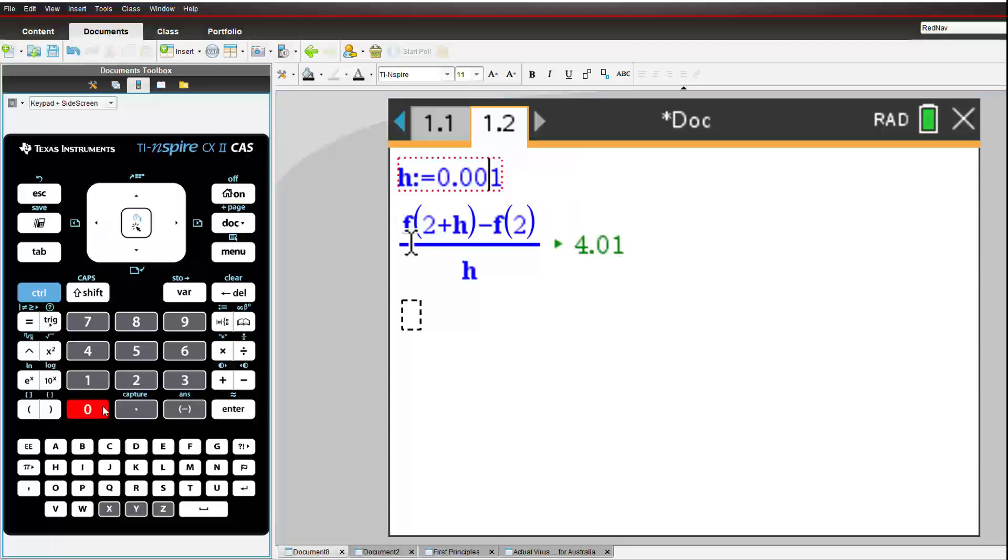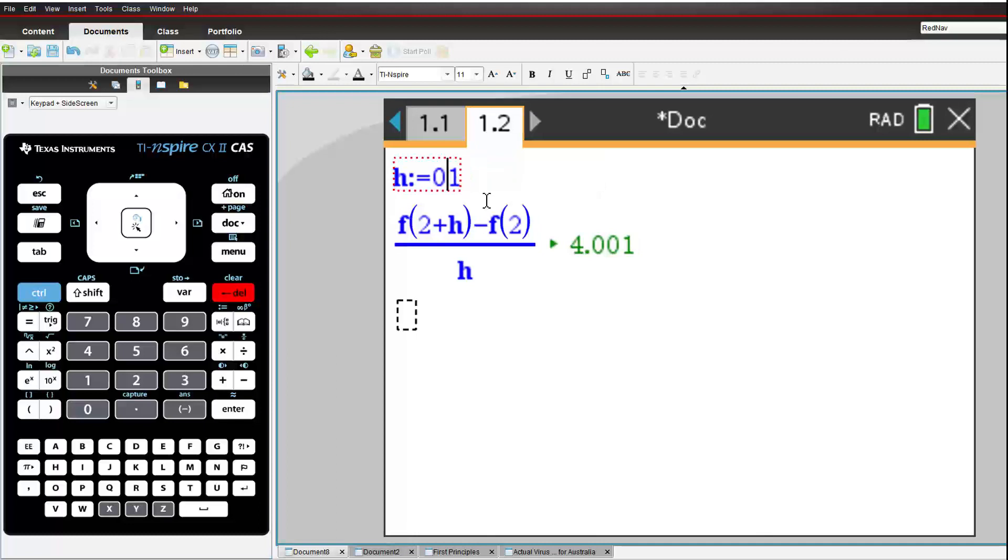So, what if I started at a different point? Let's say I want to work out the gradient of the point on the curve where x equals 3. I can do the same thing. Starting with the second point being at 4, and progressively moving it closer and closer to where x equals 3.